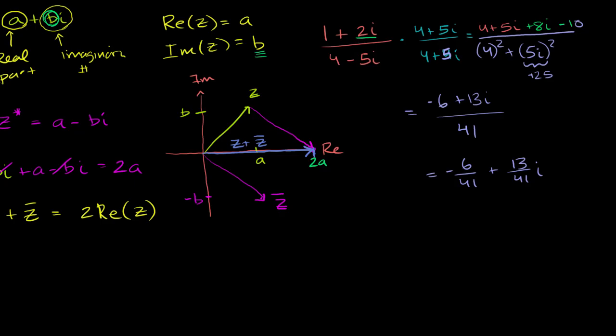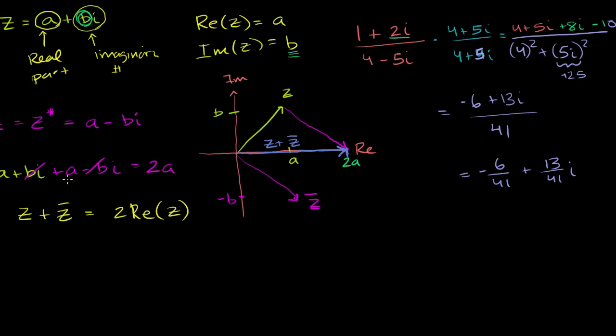So the useful thing here is the property that if I take any complex number and I multiply it by its conjugate—and obviously the conjugate of the conjugate is the original number—but if I take any complex number and I multiply it by its conjugate, so this would be a plus bi times a minus bi,